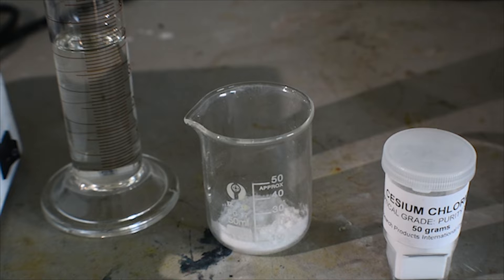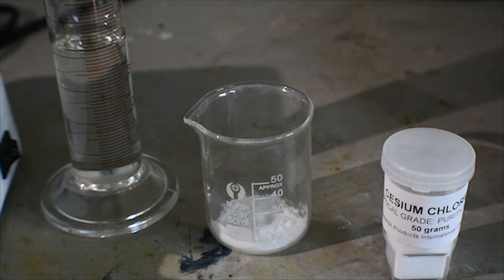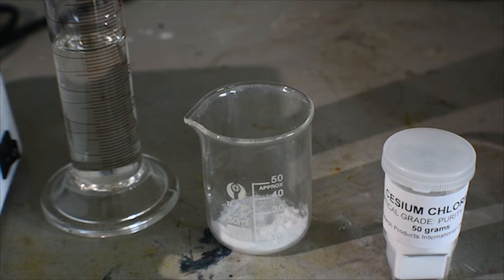I will then take the potassium tetrachloroiodate that's produced and react it in a double displacement reaction with cesium chloride. This will produce potassium chloride and cesium tetrachloroiodate, which is considerably more stable than potassium tetrachloroiodate, the latter releasing iodine trichloride as it decomposes at room temperature. Cesium tetrachloroiodate is stable in storage and does not evolve iodine trichloride and can be kept for a very long time without significant decomposition.